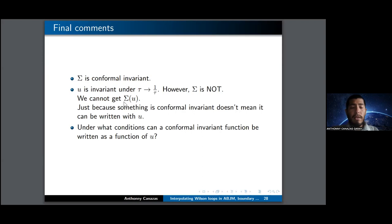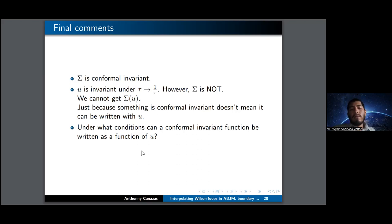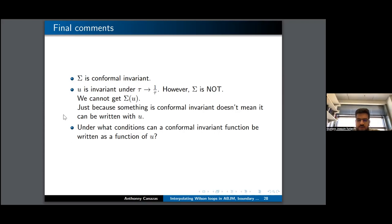These are my final comments. Sigma is conformally invariant, and since the cross-ratio U is invariant under the tau to one-over-tau transformation, sigma is not. This means we cannot write sigma as a function of the cross-ratio. So just because something is conformally invariant doesn't mean it can be written using the cross-ratio — this is an example of that. An open question I have is: under what conditions can a conformally invariant function be written as a function of the cross-ratio? That's the end of the talk — thanks for listening.